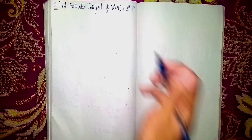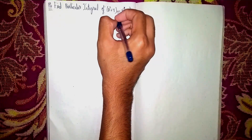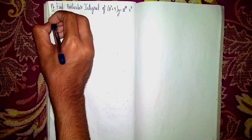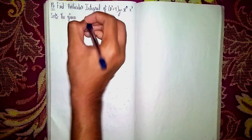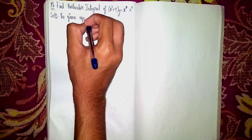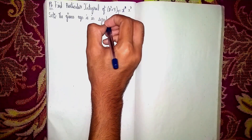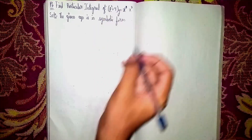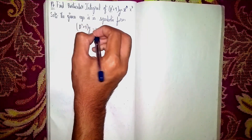Hello everyone, welcome back to my channel. For this question, find the particular integral of (D² + 4)y = x³. This is the non-homogeneous linear differential equation. First, write the solution. The given equation is in symbolic form — D means the differential operator, so write the equation as (D² + 4)y = x³.